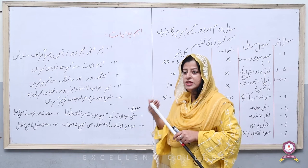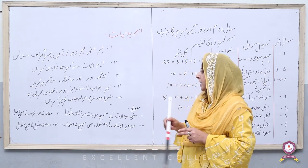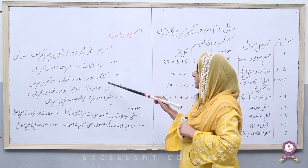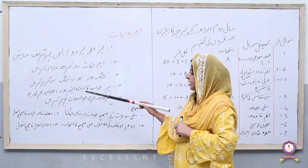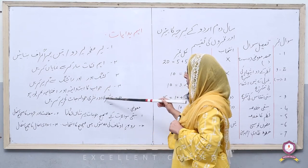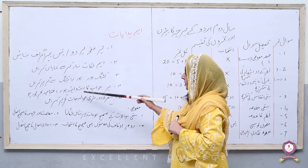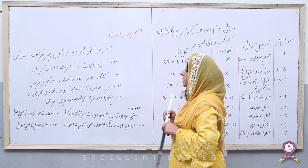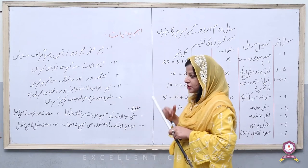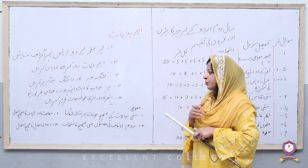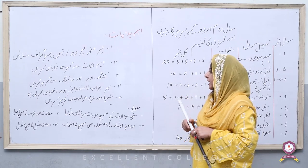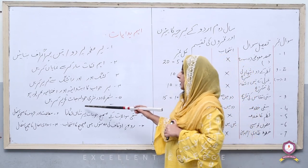چوتھی ہدایت: ہر جواب کا ابتدائیہ اور اختتامیہ بھرپور ہو۔ جب انسان کسی شخص سے ملتا ہے تو سب سے پہلے اس کی شخصیت دیکھتا ہے — اسی طرح ممتحن پیپر چیک کرتے وقت ابتدائیہ اور اختتامیہ دیکھتا ہے۔ تشریح ہو، سیاق و سباق ہو، مضمون ہو، خط ہو یا درخواست — ابتدائیہ اور اختتام بھرپور کریں۔ پانچویں بات: شعری اور نثری حوالہ جات تحریر کریں، بغیر کوٹیشن اور حوالوں کے نمبر کٹ جاتے ہیں۔